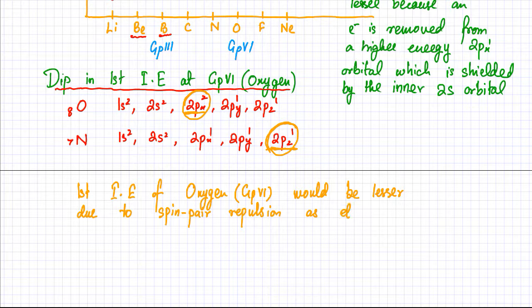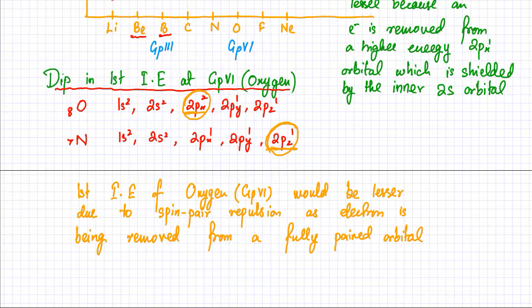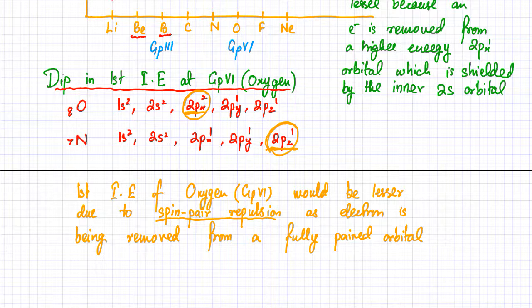Because the orbital is full there's a lot of repulsion, so it's easier to remove an electron from oxygen — which is why there's a dip at oxygen. The ionization energy of oxygen is considerably less than nitrogen and doesn't follow the general trend. So that explains the dip at group three and the dip at group six. These two points are very frequently asked in past papers. Remember to use the correct wording: 'spin-pair repulsion' is the term used to describe electron-electron repulsion in a fully paired orbital.